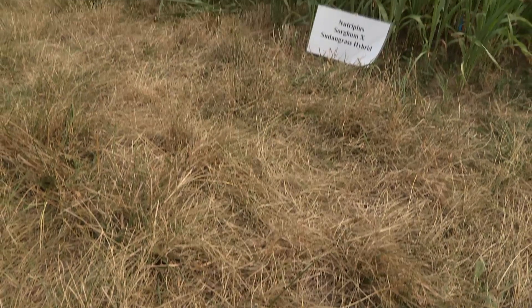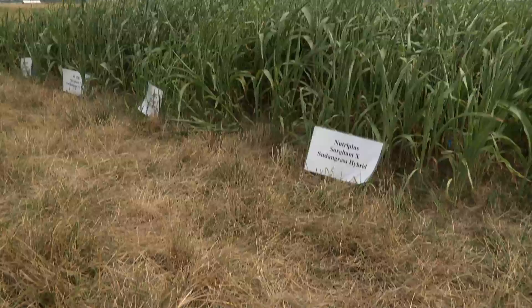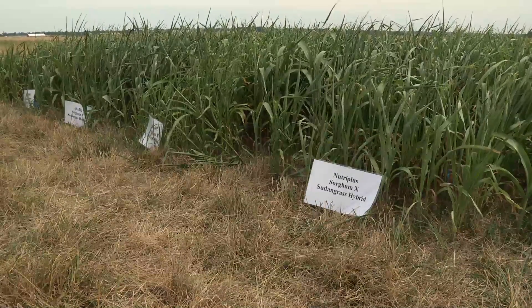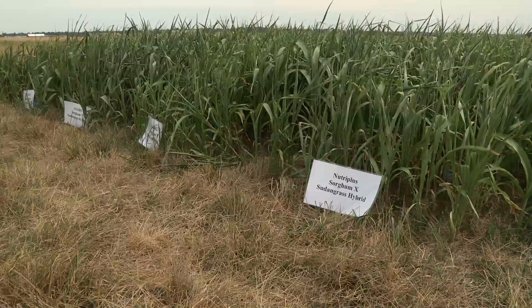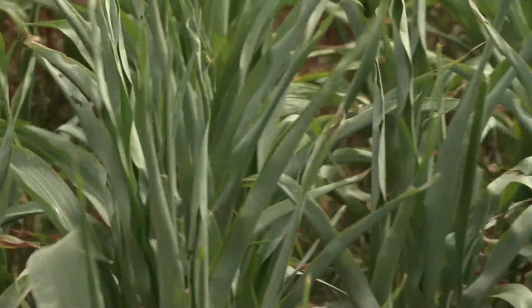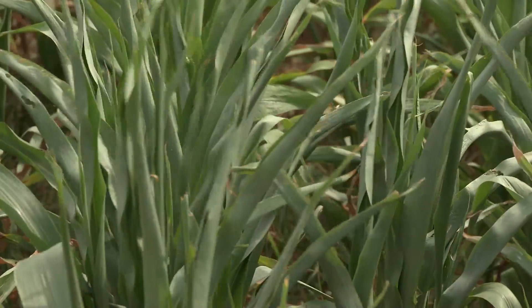One of those is the fertilizer that you put on sorghum sudan grass. If the plant is not actively growing, then that can accumulate at the base of the plant. The nitrogen fertilizer accumulates in the base of the plant as nitrate.